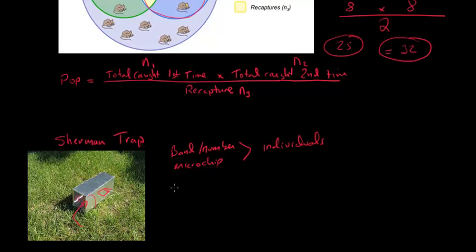You can also mark where you don't need to know the individuals, but you can use a paint or like fingernail polish. Or as gruesome as it sounds, you can actually clip the end of a toe off. And it doesn't seem to have a lasting, as long as you don't clip too many toes on the mouse, it doesn't seem to affect them a whole lot.